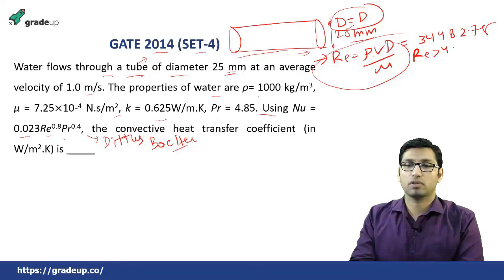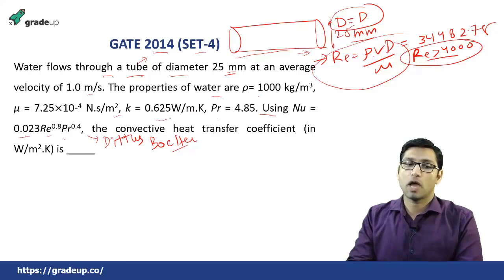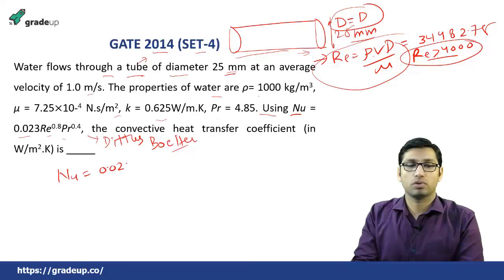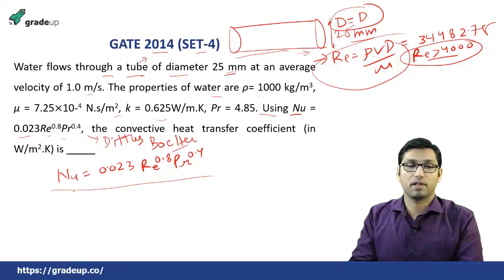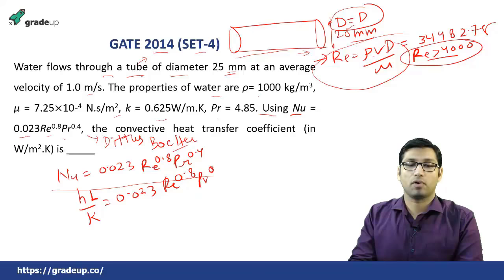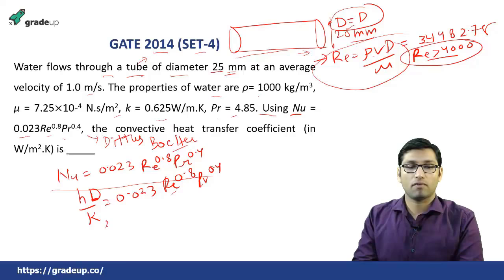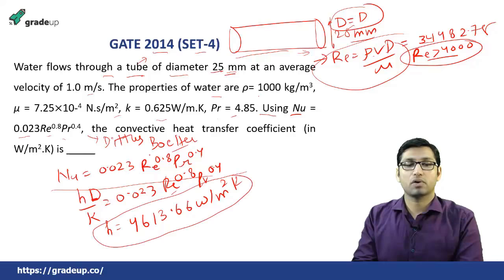For this turbulent pipe flow, use Nu = hL/K = 0.023 × Re^0.8 × Pr^0.4. The Reynolds number has been found, and the Prandtl number is given in the question. Here L equals D, the diameter of the pipe. After solving, you get h = 4613.66 W/m²K. As mentioned in the question, you have to find the convective heat transfer coefficient in W/m²K, so this is the final answer.